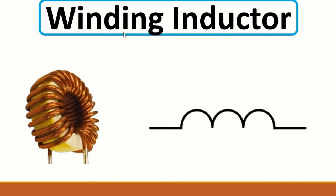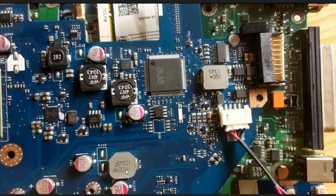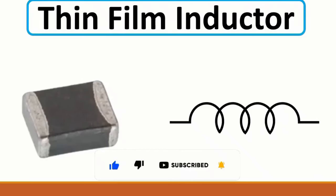Then we have the inductor or coil - a winding inductor. This is its symbol, and we find this kind of inductor in the computer motherboard. Then we have the stacked inductor with its symbol. As you can see in the motherboard, we have stacked inductors here and here. The reference for inductors is 'L' or 'PL' - for example, PL38 or L13.